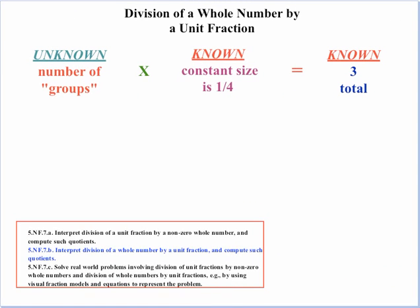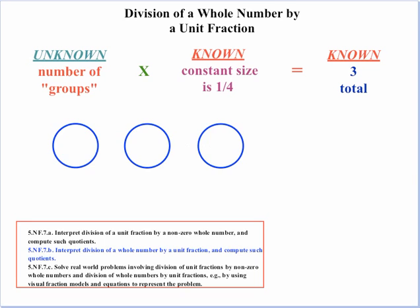Now let's look at Standard 7B: division of a whole number by a unit fraction. For that type of model, the easiest context is when you know the total and the constant size, and you're looking for the number of groups. Let's say we have a total of three, the size of the groups is one-fourth, and we're looking for the number of groups. Symbolically, that would be three divided by one-fourth. So we draw three circles to represent our total of three.